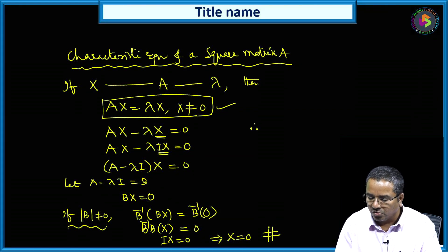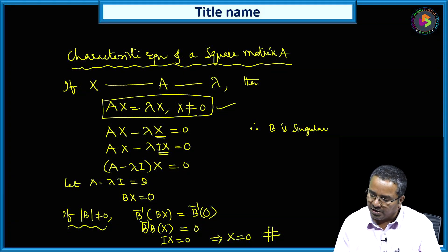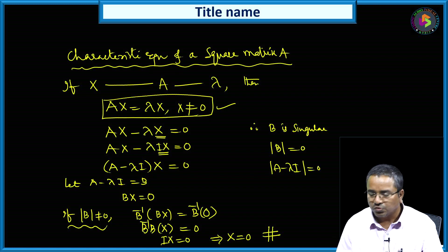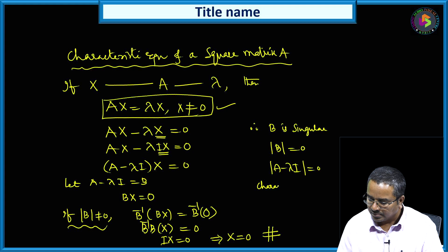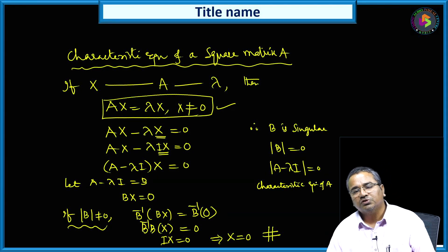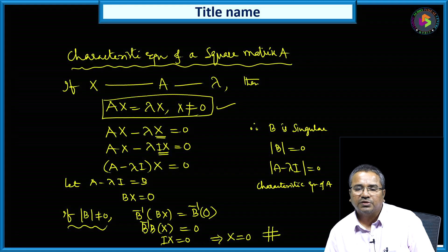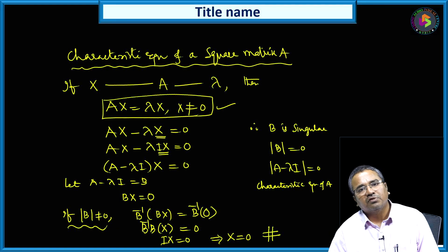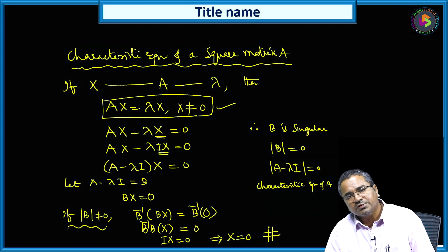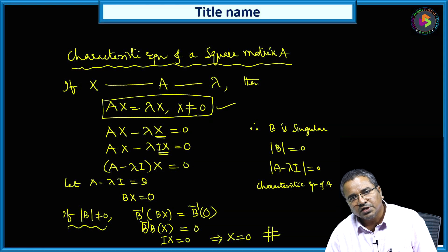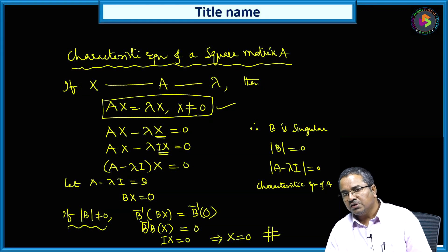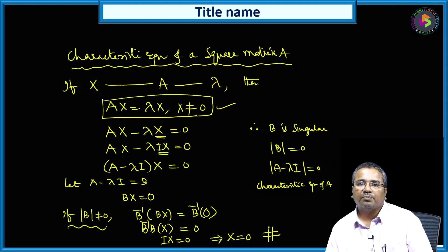B is singular means det(B) = 0. Therefore, det(A - λI) = 0. This is called the characteristic equation of matrix A. The roots of this equation will determine the eigenvalues of A. If A is a 2×2 matrix, the characteristic equation is a second-degree equation. If A is a 3×3 matrix, it is a third-degree equation. For an n×n square matrix, it will be an nth-degree equation.